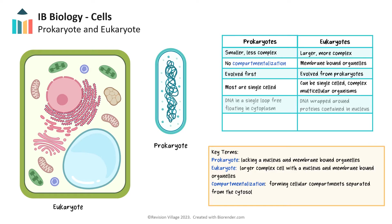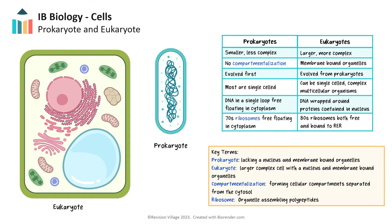Prokaryotes have DNA found as a chromosome in a single loop, free-floating in the cytoplasm in a region referred to as the nucleoid, while eukaryotic cells have DNA wound around histone proteins and contained in a double-membrane-bound nucleus with pores, separate from the cytoplasm. Both eukaryotic and prokaryotic cells have ribosomes. Prokaryotes have smaller, less dense 70S ribosomes that are free-floating in the cytoplasm, while eukaryotes have larger, denser 80S ribosomes embedded in the rough endoplasmic reticulum as well as free-floating in the cytoplasm.